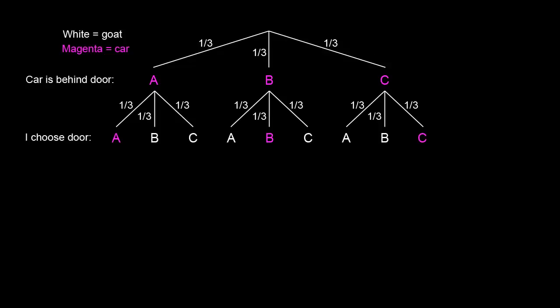Now I choose a door. I'm showing the goats as white and the cars as magenta. I can choose any door with equal probability, so at this point there are nine total possible outcomes. And each of these outcomes has a probability of one-ninth.